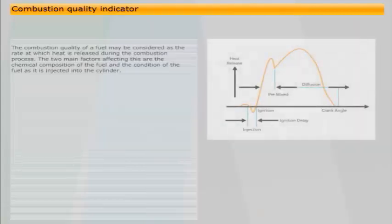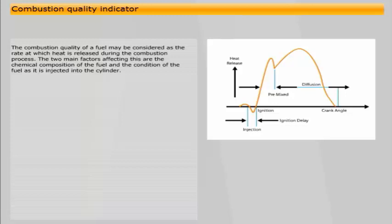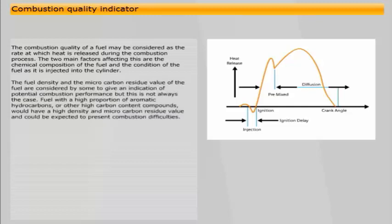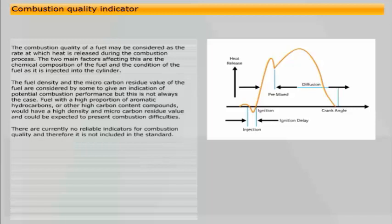The combustion quality of a fuel may be considered as the rate at which heat is released during the combustion process. The two main factors affecting this are the chemical composition of the fuel and the condition of the fuel as it is injected into the cylinder. The fuel density and the microcarbon residue value of the fuel are considered by some to give an indication of potential combustion performance, but this is not always the case. Fuel with a high proportion of aromatic hydrocarbons or other high carbon content compounds would have a high density and microcarbon residue value, and could be expected to present combustion difficulties. There are currently no reliable indicators for combustion quality, and therefore it is not included in the standard.